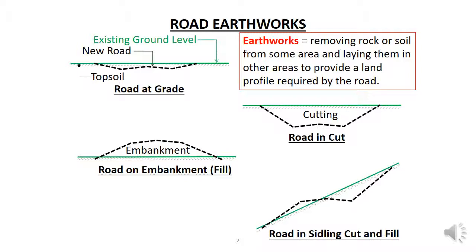Alternatively sections of a road may need to be above the existing ground level, so we need to construct a fill embankment to construct the road on. In other sections the road may run along the side of a hill, which is called a sideline cut. The hill section may be a balance of cut and fill, or it may be entirely in cut or entirely in fill. Roads usually involve a mix of these types of earthworks — some sections at grade, some in cut, some in fill, and some in the sideline cut.